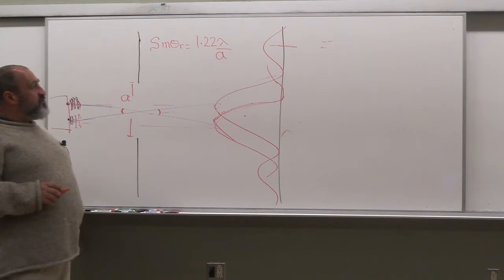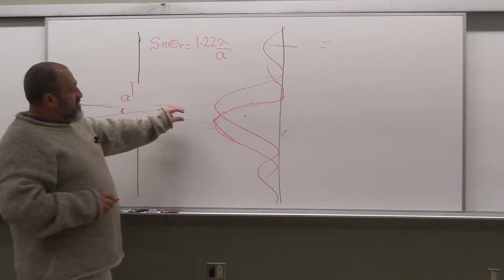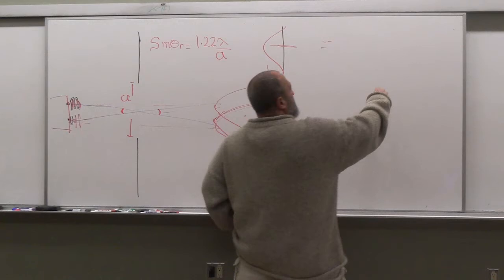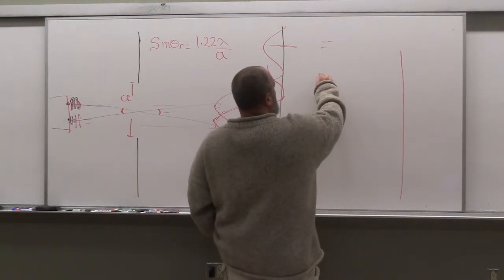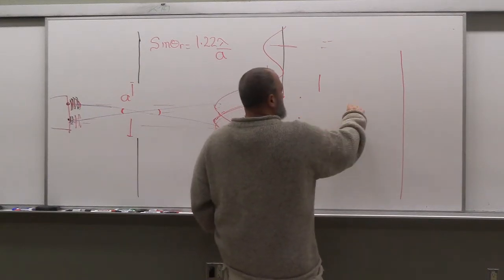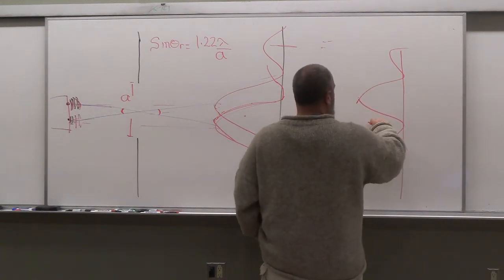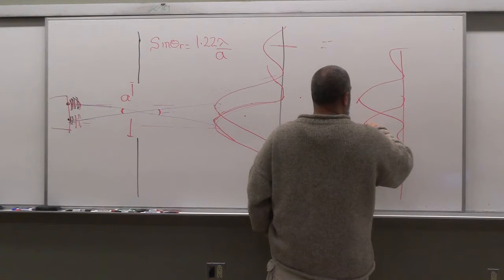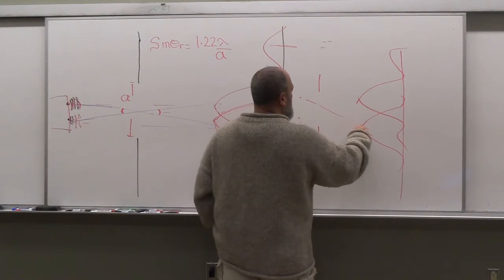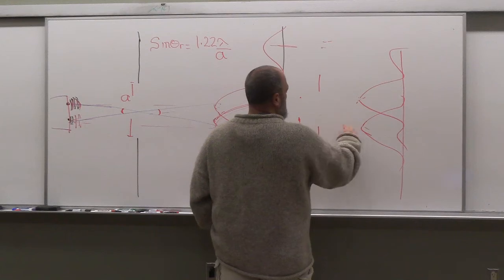Basically, as long as the angular separation theta here is bigger than the Rayleigh angle, we can tell the two objects apart. So if you're looking at two mountain ranges on Mars through a telescope, think about what improves the resolution. The aperture through which you see things is your eye — limited to about five millimeters. So let's do an example now.